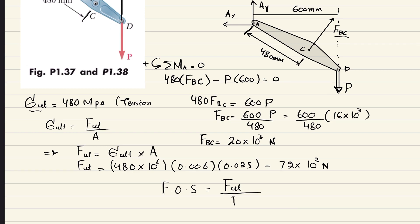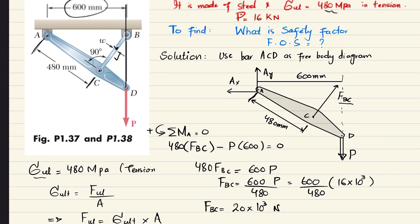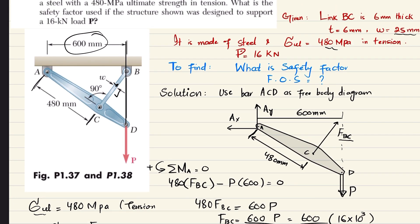So 72 times 10 to the power 3 newton divided by 20 times 10 to the power 3 newton. When you calculate it, you get factor of safety equals 3.60. So it means our design is 3.60 times safer due to a load of 16 kilonewton.